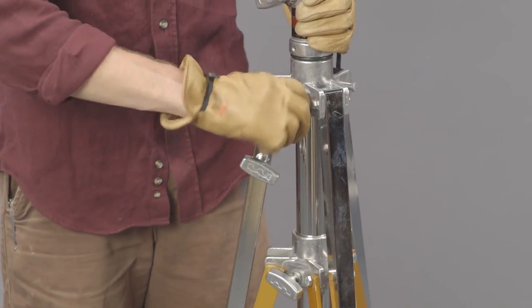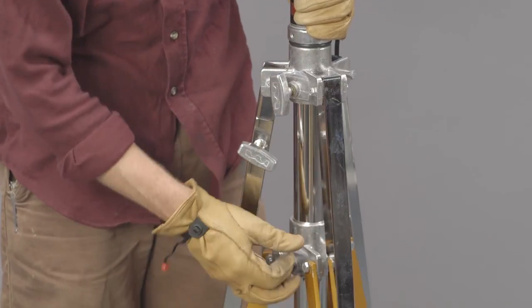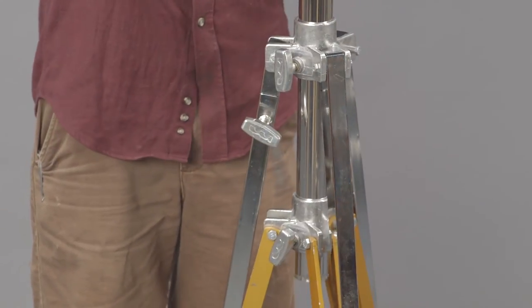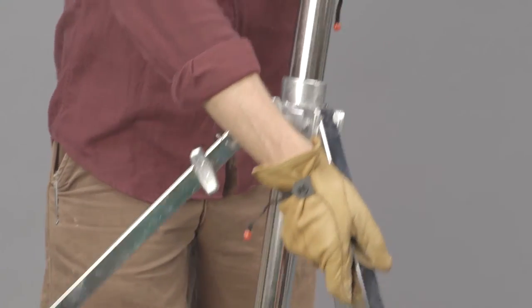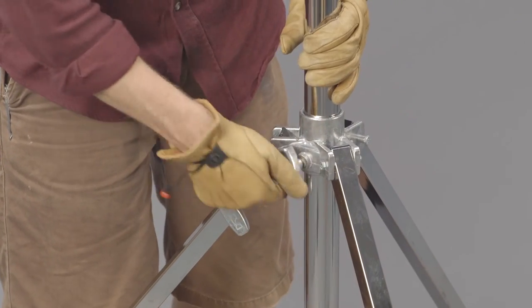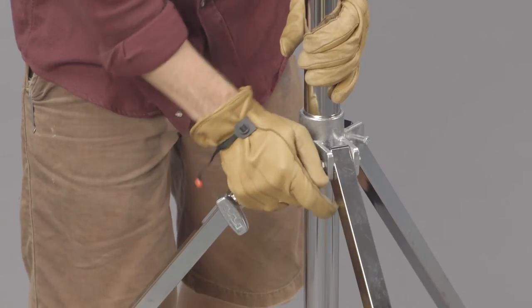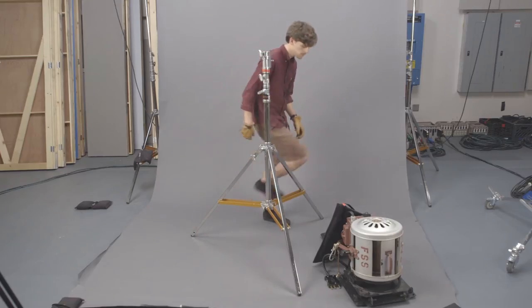To open the stand, loosen the leg tie down and the spreader tie down. Pull up on the shaft of the stand. When the bottom of the shaft hits the spreaders, tighten the spreader tie down. Push down until the spreaders are level with the ground, then tighten the leg tie down. Now you're ready for a light.